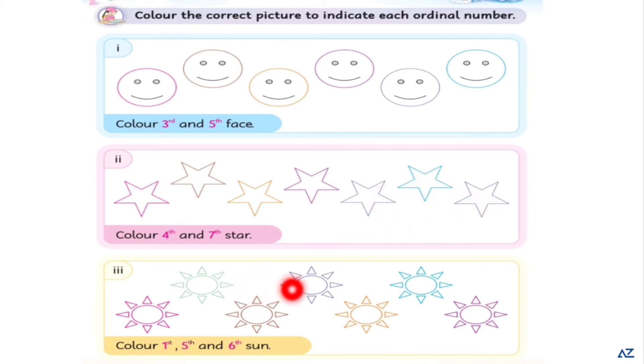Color 1st, 5th and 6th sun. 1st, color in this. 2nd, 3rd, 4th, 5th, color in this sun. 6th, and color in this sun.